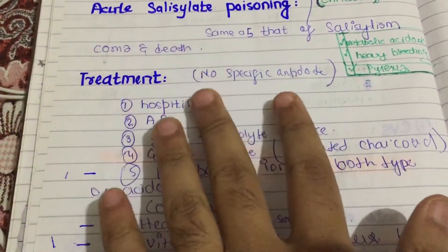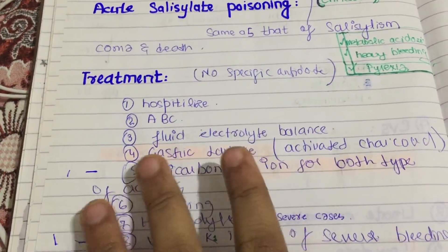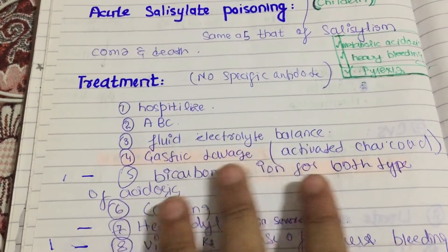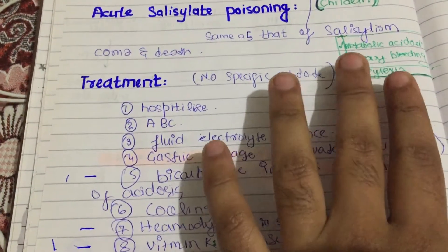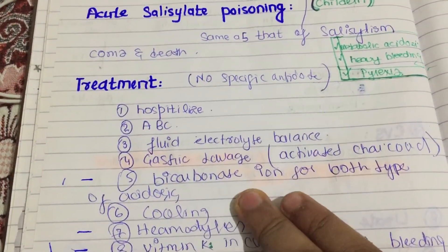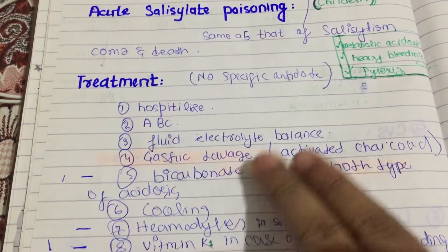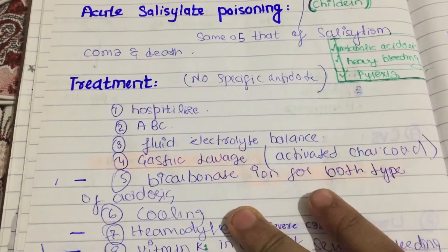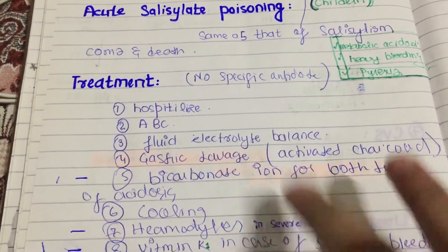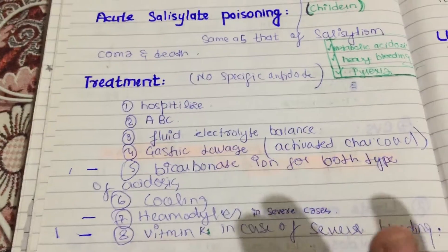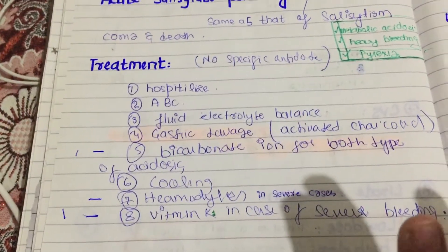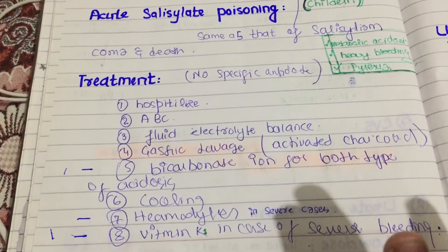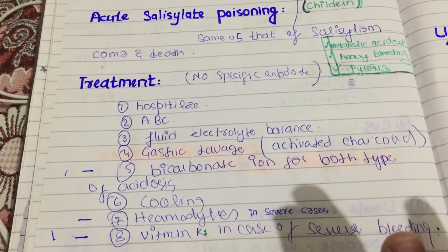To summarize: hospitalization, ABC, fluid and electrolyte balance, gastric lavage, metabolic acidosis treated with bicarbonate, heavy bleeding with vitamin K, pyrexia with cooling, and hemodialysis. That's it — we are done with Acute Salicylate Poisoning. Thank you.